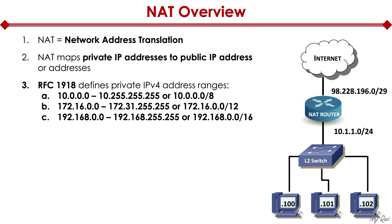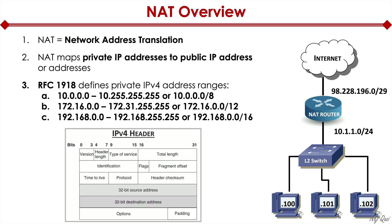If you look at this diagram, you have PCs at the bottom connected to a switch, with a LAN IP range of 10.1.1.0/24. On the external side of our NAT router, the range is 98.228.196.0/29. When we enable NAT, the NAT router takes our private IP address and maps it to the public IP.